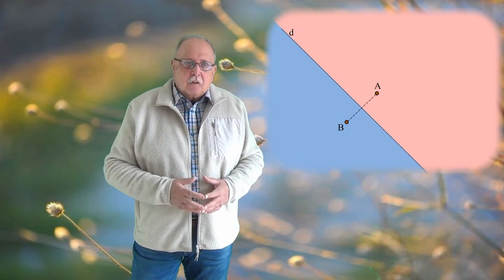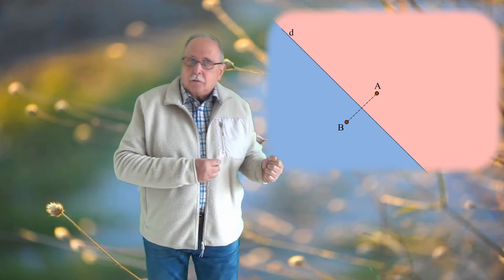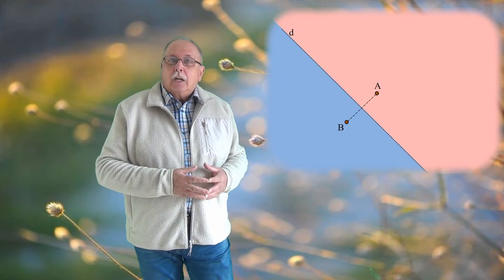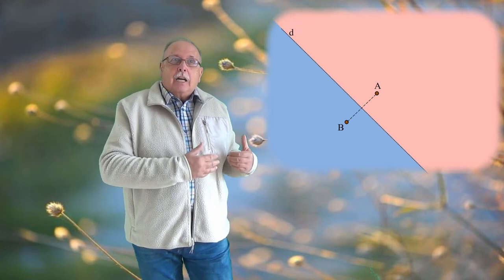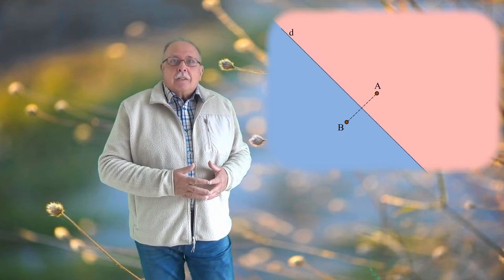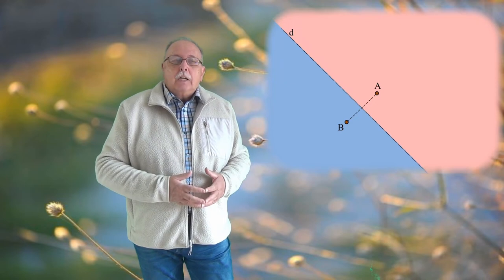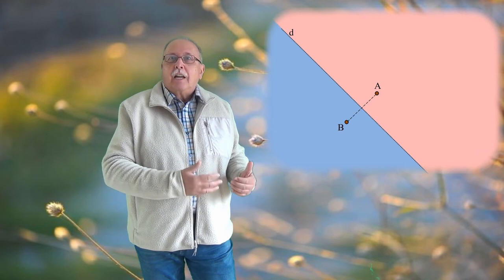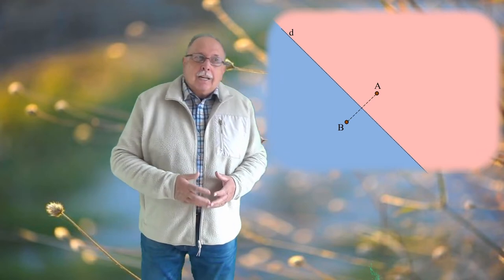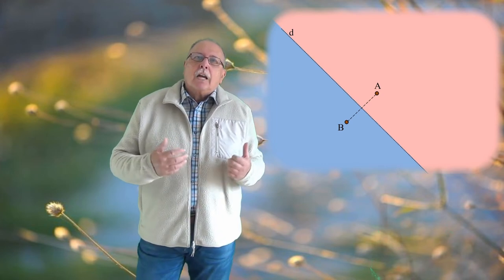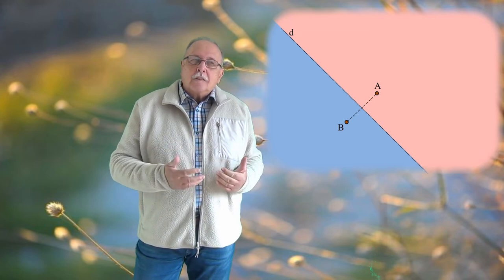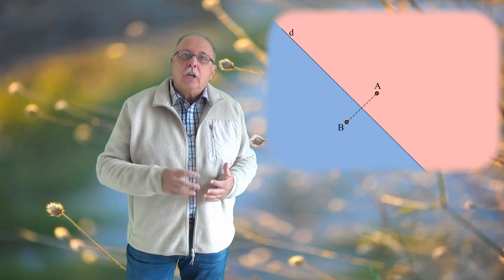Se poate observa că orice insulă din semiplanul albastru se găsește mai aproape de insula B decât de insula A. Și asta înseamnă că oriunde ar fi această insulă în semiplanul albastru, barca ei s-ar deplasa în B. La fel se poate observa că oriunde ar fi această a treia insulă în semiplanul roz, ar fi mai aproape de insula A decât de insula B, ceea ce înseamnă că barca de pe această insulă s-ar deplasa pe insula A. Dar atenție! Deși barca de pe oricare insulă din semiplanul roz ajunge pe insula A, nu orice insulă din semiplanul roz face să ajungă două bărci pe insula A.